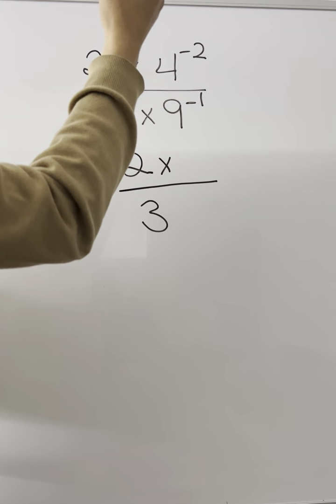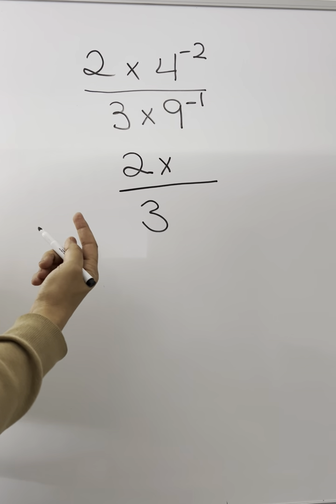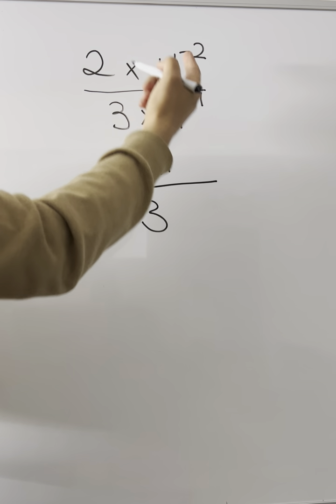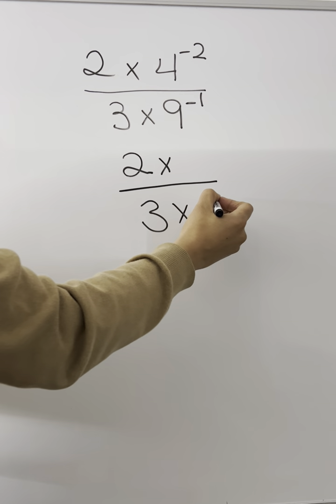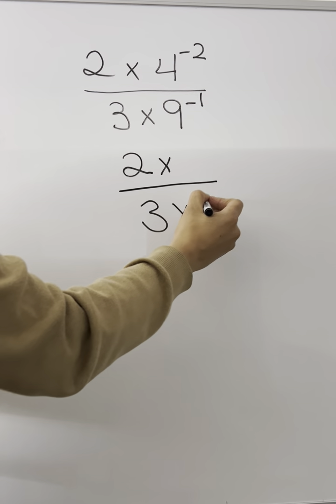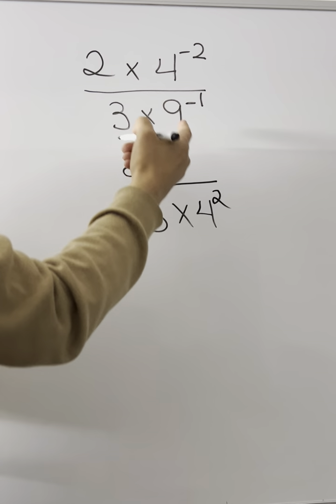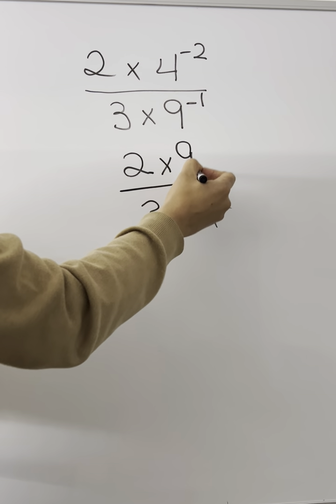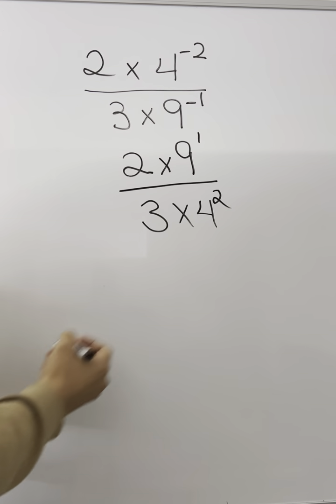And if it's on top, you bring it to the bottom and that will change the exponent to positive. So I'm going to bring the 4 to the bottom and that will change the exponent to positive. And I'm going to bring the 9 to the top and that exponent becomes positive 1.